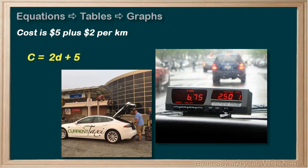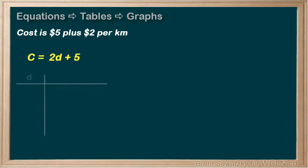So how can we convert this into a table? The variable d is in the first column, and the cost, c, would be in the second column.